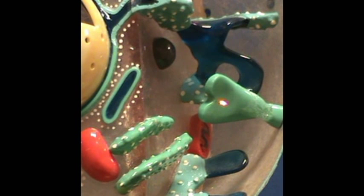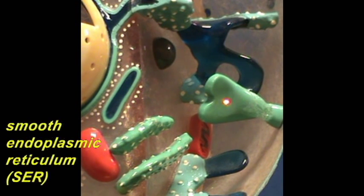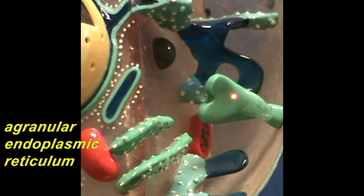This also represents endoplasmic reticulum, but notice that in contrast to the neighboring endoplasmic reticulum, this endoplasmic reticulum does not have those white granules which represent ribosomes on the surface. This particular endoplasmic reticulum would be smooth endoplasmic reticulum. It's also known as agranular endoplasmic reticulum.